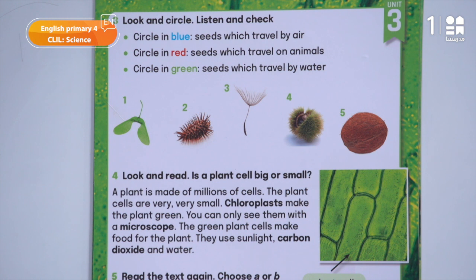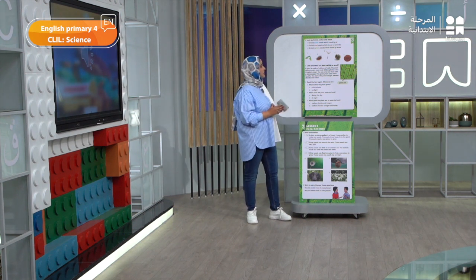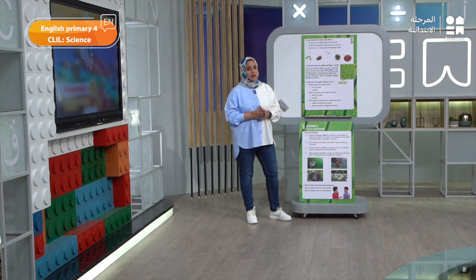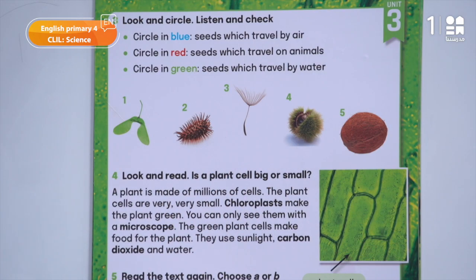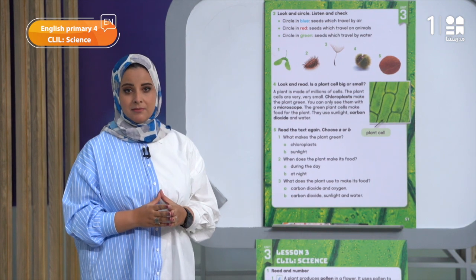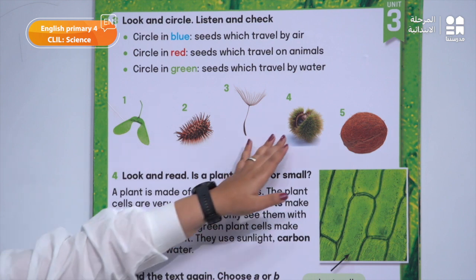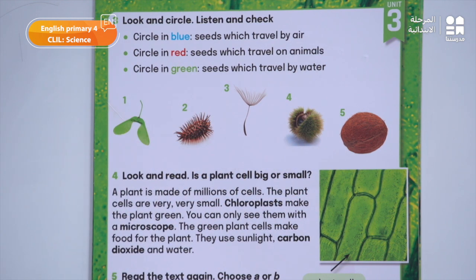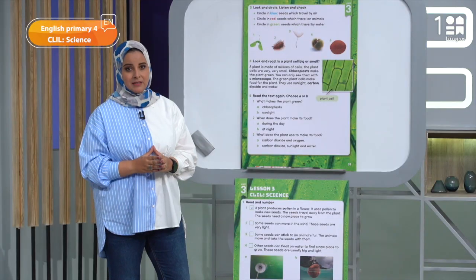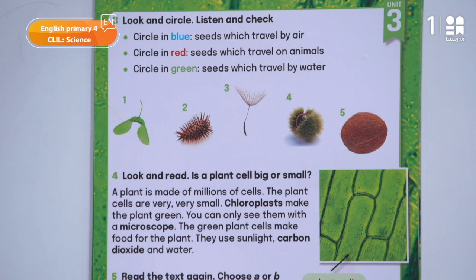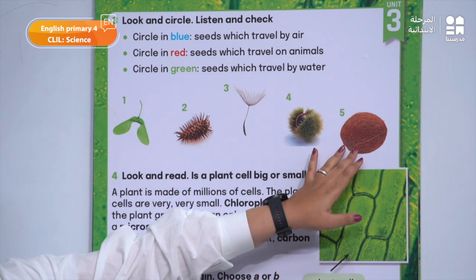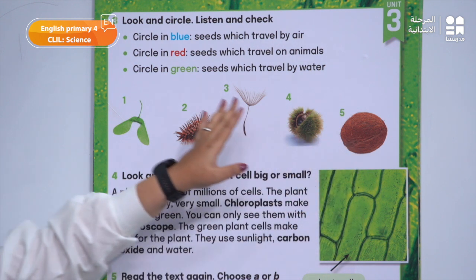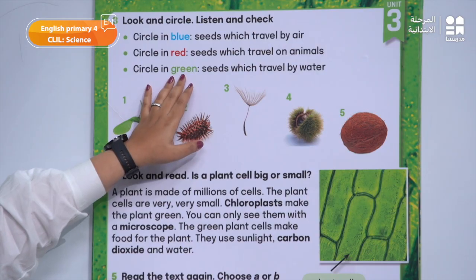Number 3 — it is so light, so number 3 travels by air. Our color will be blue. Number 4 — does it travel by air, on animals, or by water? This seed travels by water, so which color are you going to circle with? The green color. Very good, my dear boys and girls.